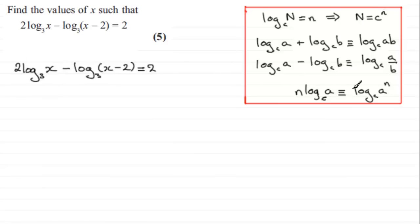And we can use this rule here, the power rule. That when you've got a number in front of a log then all you do is you take it up as a power here. So this term here can be written as the log in base 3 of x squared. The 2 goes up as a power there. And then we've got minus the log in base 3 of x minus 2 and that equals 2.